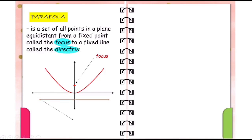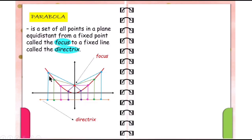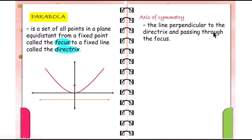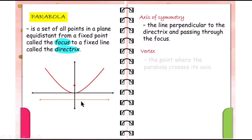So these points are all equidistant from the focus, which is the fixed point, to the directrix, which is the fixed line — meaning the distance from this point to the focus is the same as its distance from this point to the directrix. The line perpendicular to the directrix and passing through the focus is called the axis of symmetry. This line is the axis of symmetry because it passes through the focus and is perpendicular to the directrix. The vertex is the point where the parabola crosses its axis.